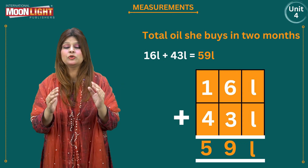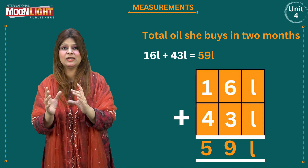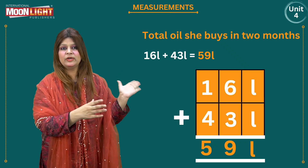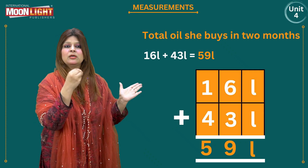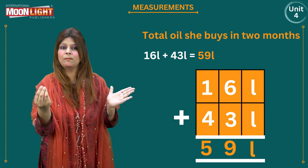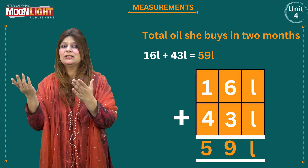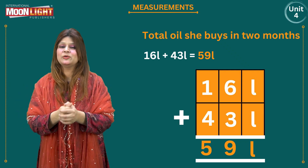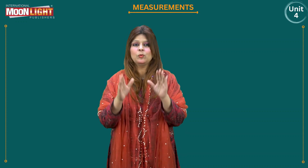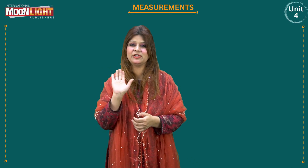Since this is a real life situation question, you give your answer in a complete sentence. You can write: Total oil Salma buys is 59 liters. In this way you complete the sentence and the procedure. We will get back to you with more interesting concepts of mathematics. Take good care of yourself. Allah Hafiz.